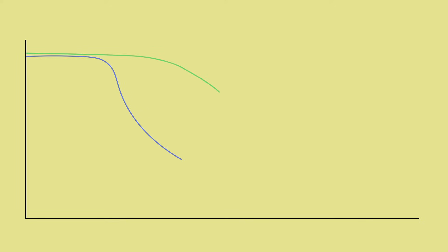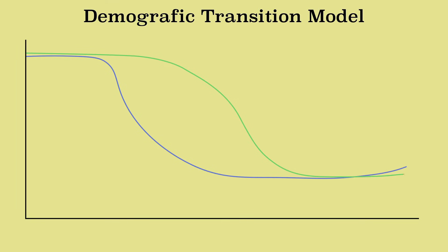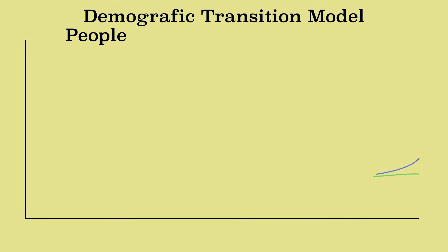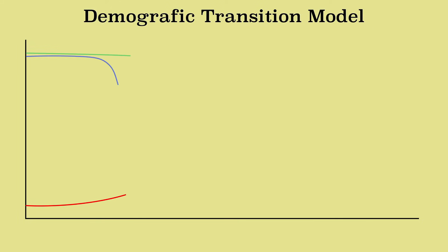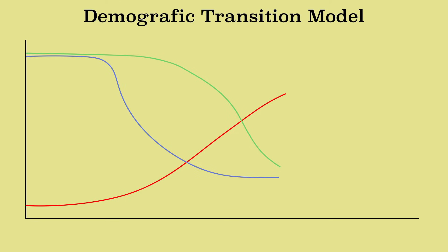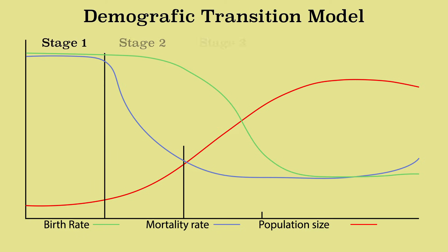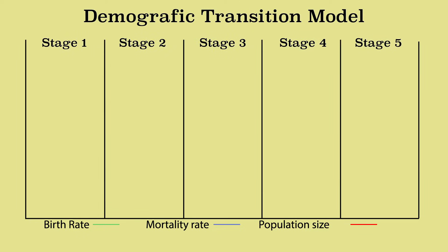The birth rate and the mortality rate show us a lot about the development of a country, because they develop over time. We can show this development in the demographic transition model. 'Demos' means people and 'graphy' means description. The demographic transition model shows us a change in the characteristics of the birth and the mortality rate. We can show it as a graph, in which the lines represent the birth rate, the mortality rate, and the total population size. The model consists of five phases.